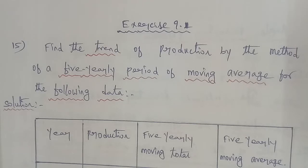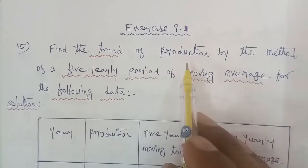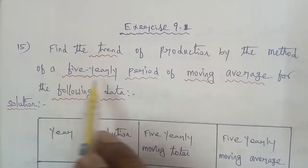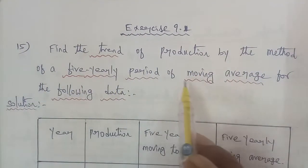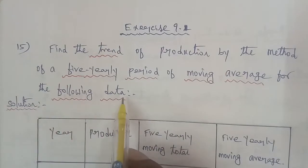Hi students, I am Gopinath. 12th Business Maths, Exercise 9.1, Question number 15. Find the trend of the production by the method of a 5-yearly period moving average for the following data.